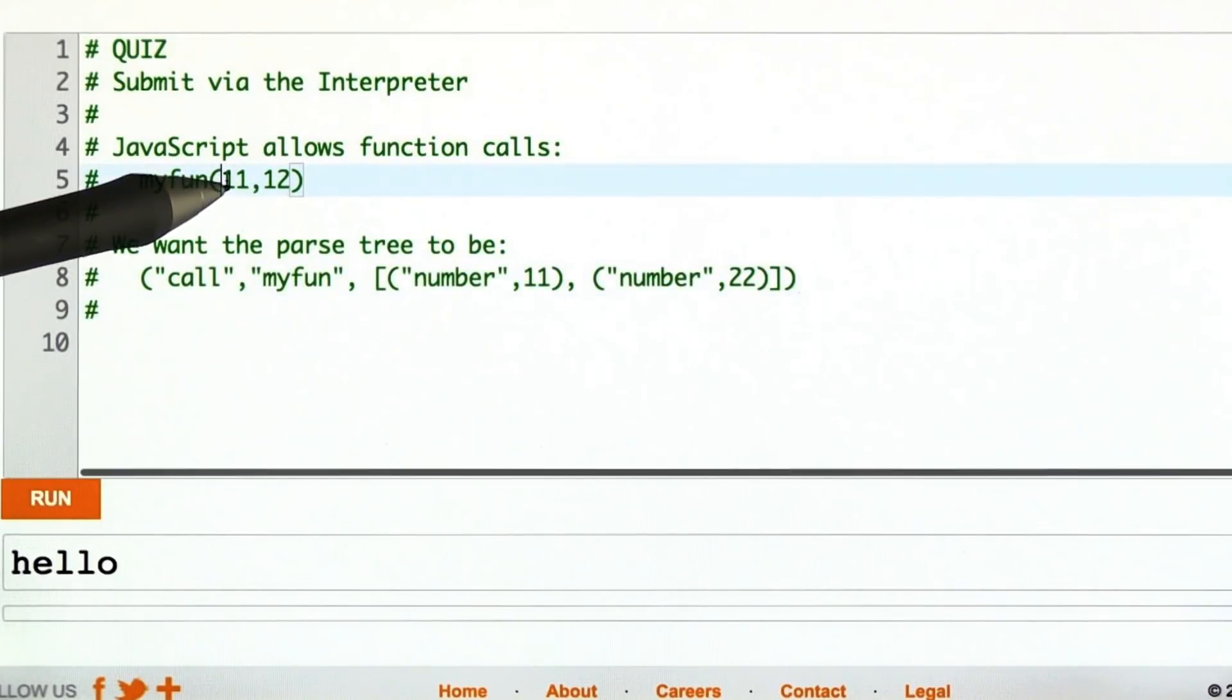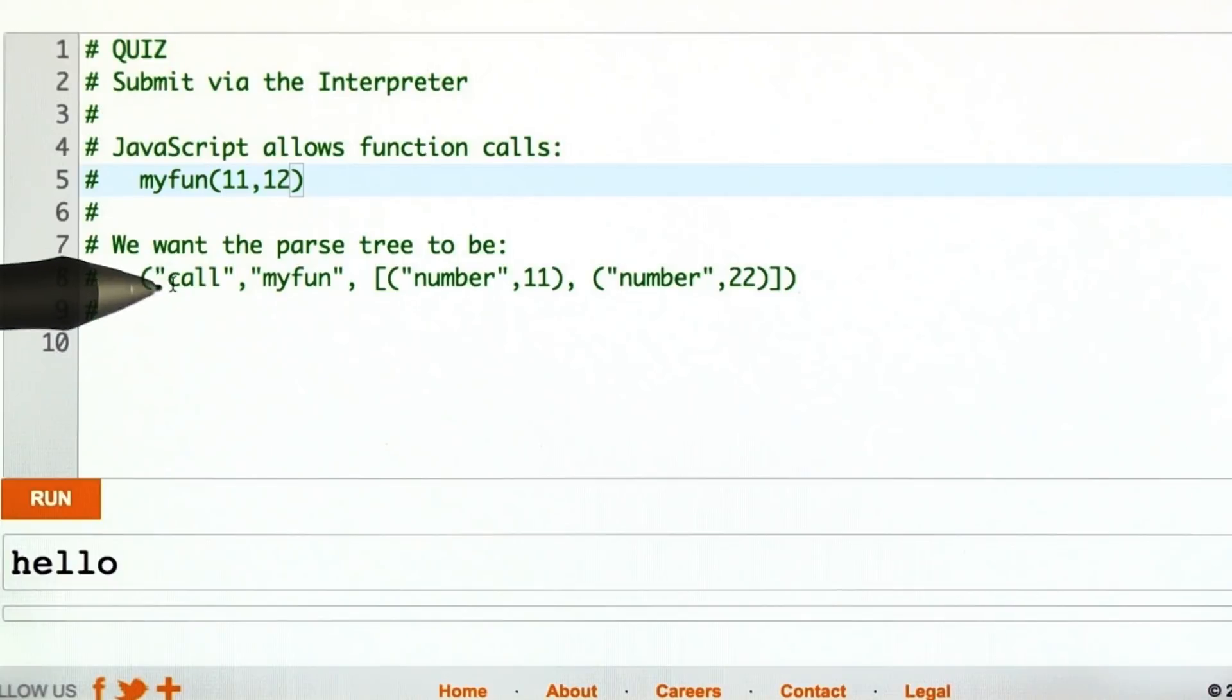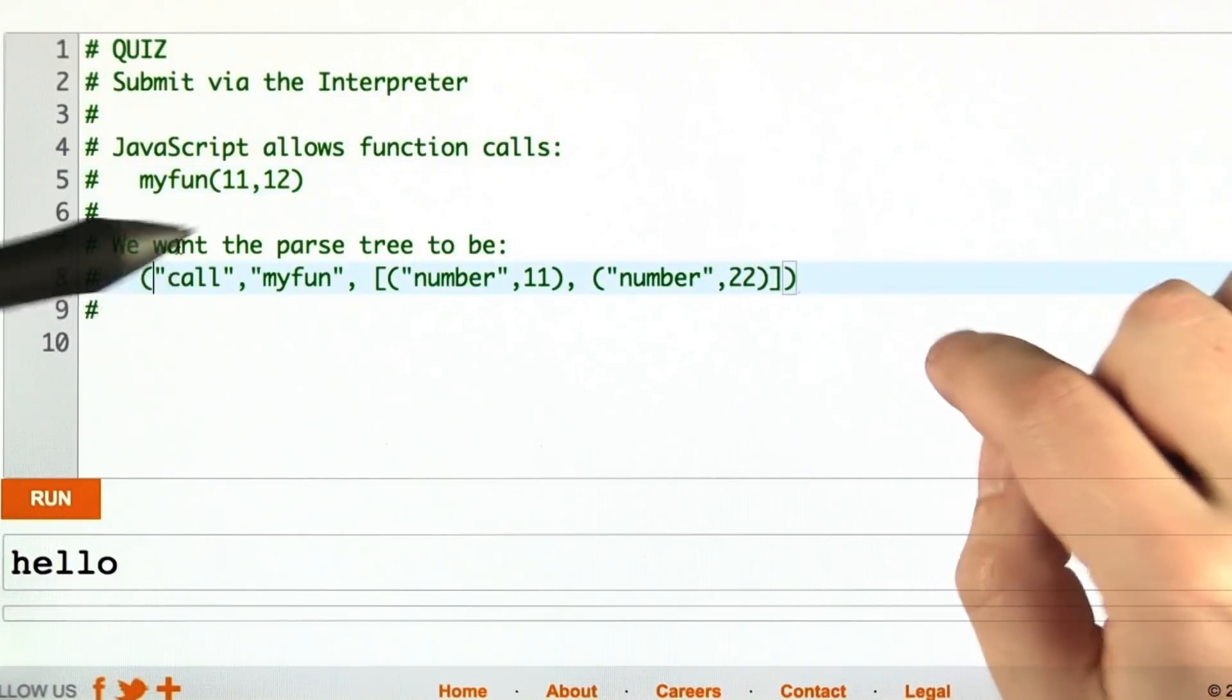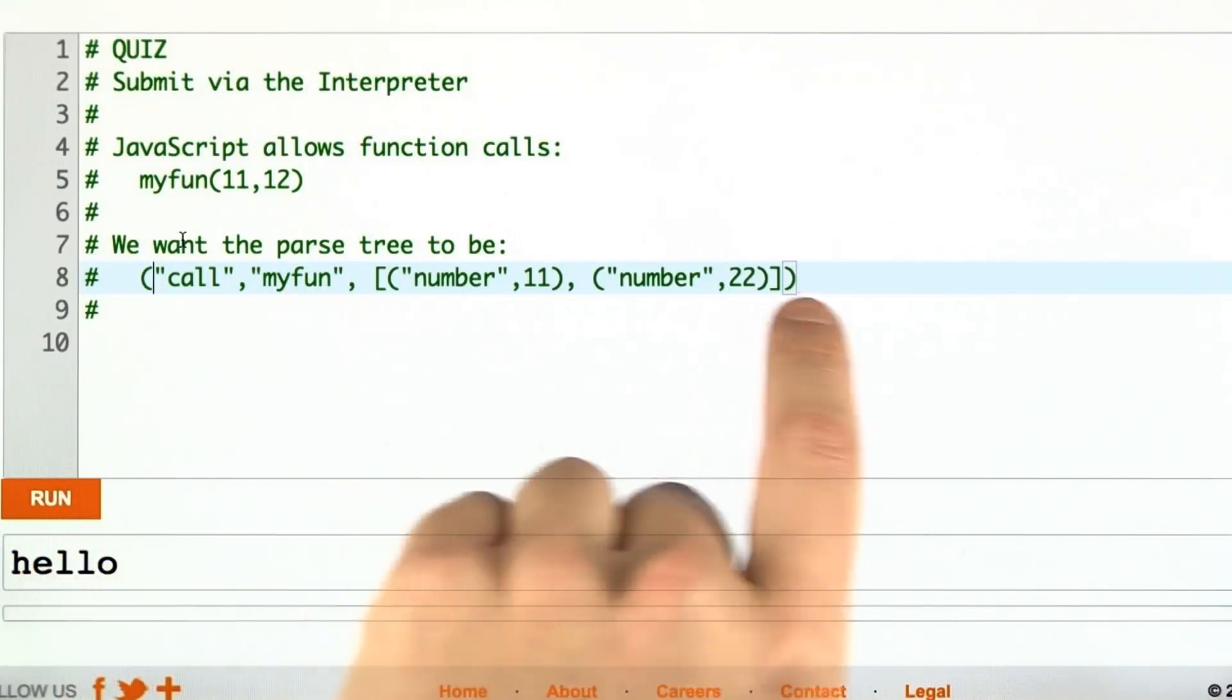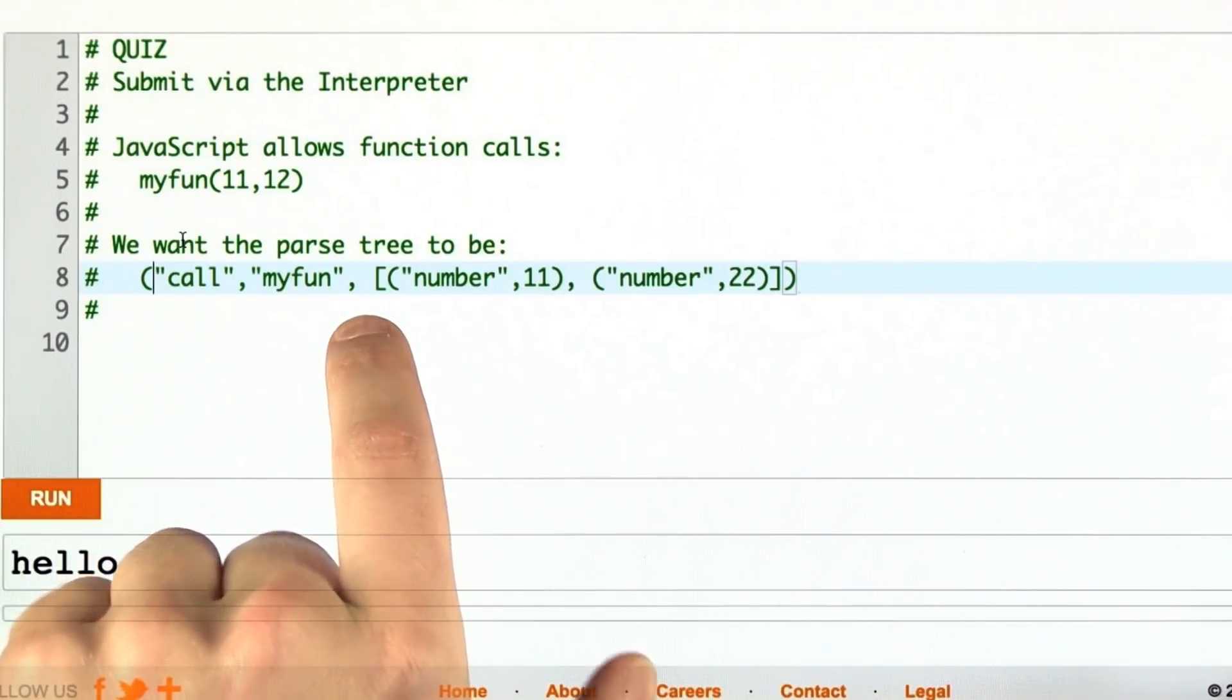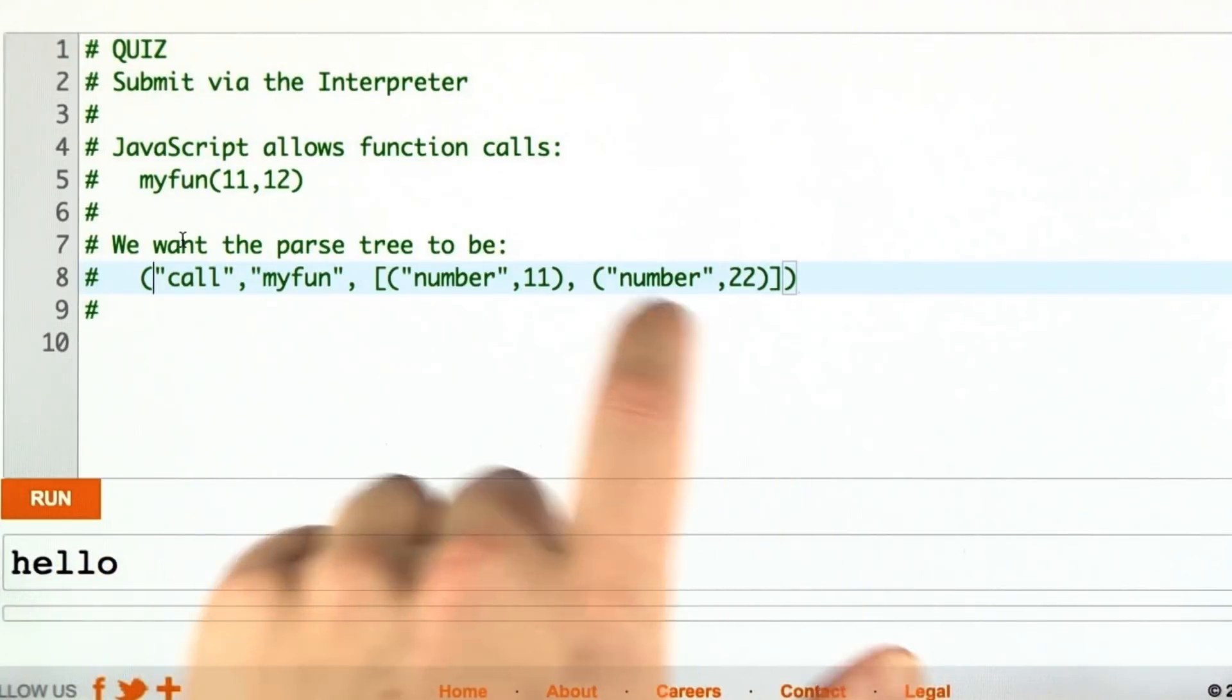For that particular function, we would want the parse tree to be a tuple. That's how we're representing parse trees. The first part is call, telling us that it's a call expression. The next part is the name of the function. And then there's a list of all of the arguments. This list may be empty if there are no arguments, or it may contain expression parse trees.